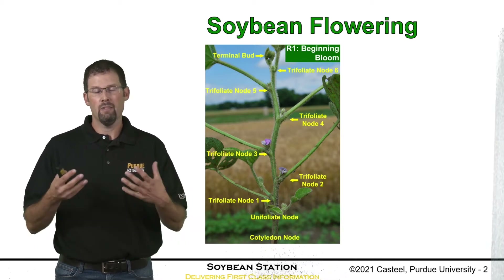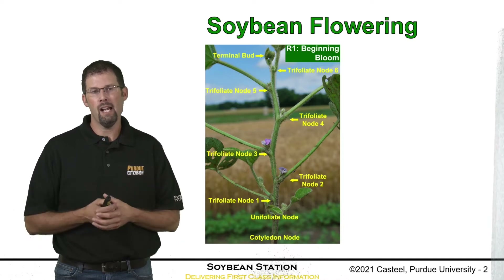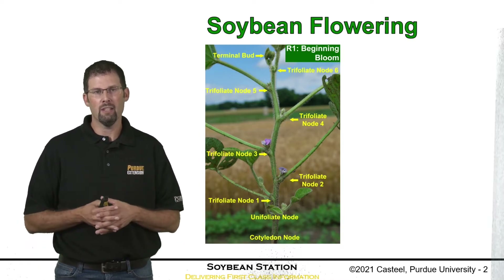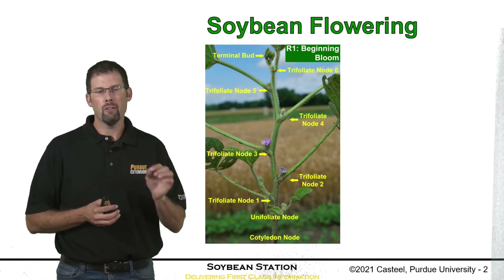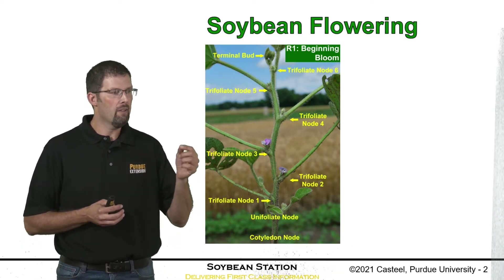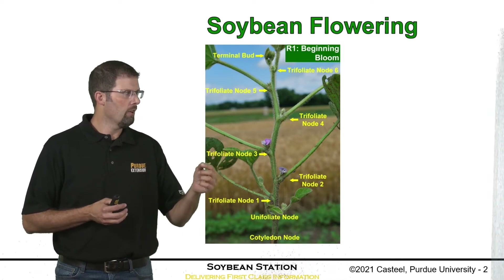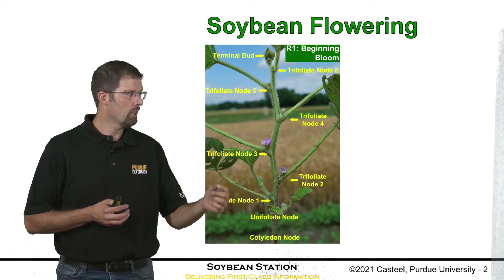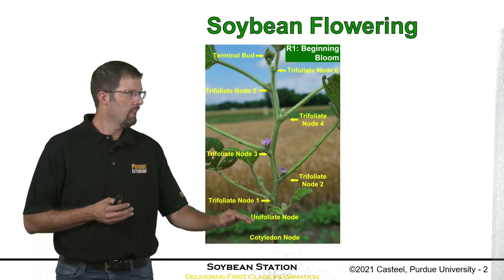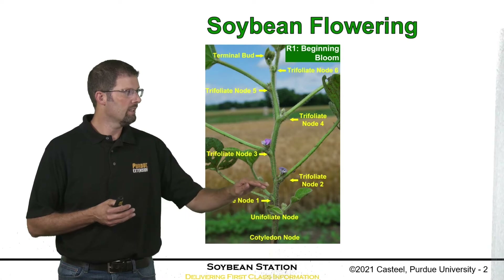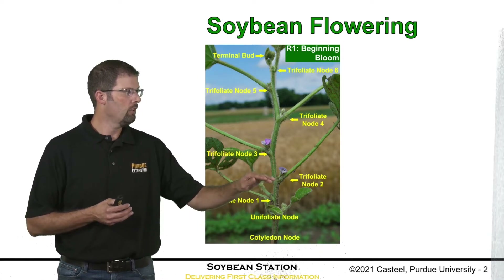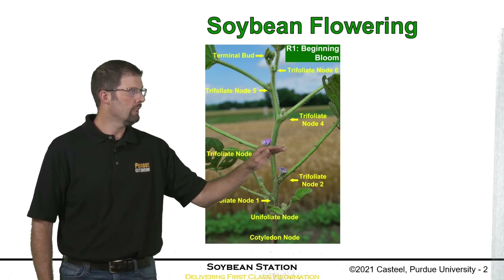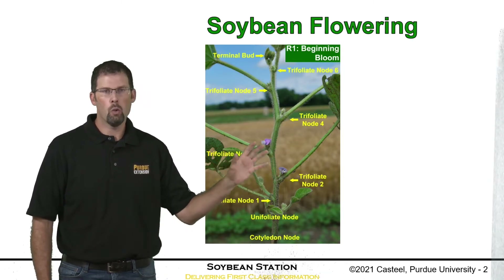As the flower develops and is seen by the human eye, this is where we come into our reproductive staging. In the case of the picture I have here, this is R1, first bloom — where we have anywhere on the main stem an open flower. Going down the plant we have the cotyledons, unifoliates, and then into the trifoliates. In this picture, we have an open flower on trifoliate node 2 and node 3. This is called R1.